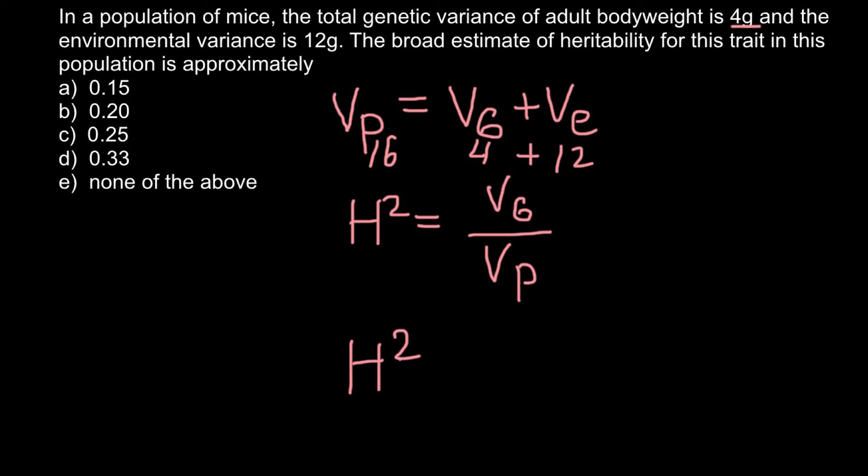So our answer would be H capital squared equals variance genetic, that would be 4, divided by variance phenotypic, that is going to be 16, and the answer would be 0.25. This is going to be our answer today, and that means the correct answer would be C.